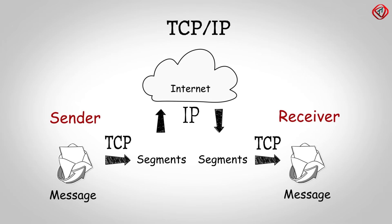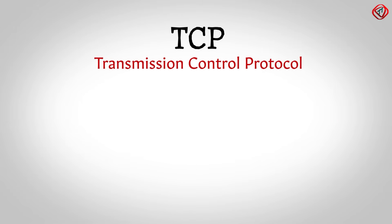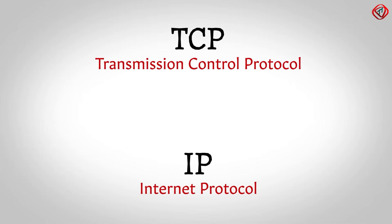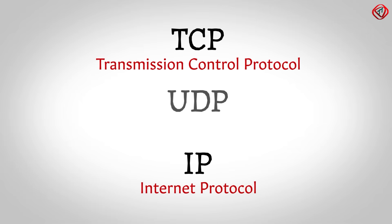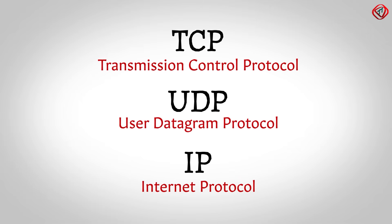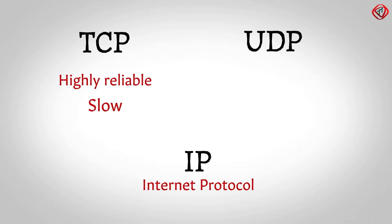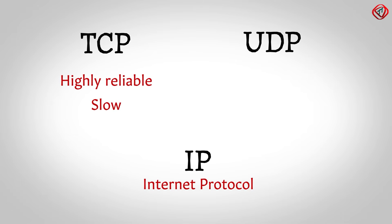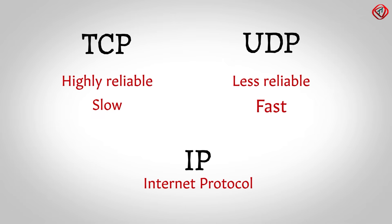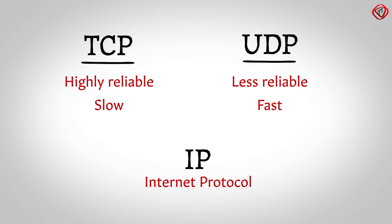The TCP module in the receiver combines the segments to form the original message. Note that TCP stands for Transmission Control Protocol, and IP stands for Internet Protocol. An alternative to TCP is UDP, which stands for User Datagram Protocol. The main difference is that TCP is highly reliable but it is slow, whereas UDP is less reliable but generally faster. Both TCP and UDP are a part of the protocol suite.